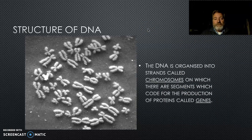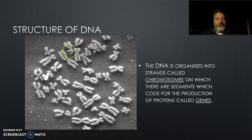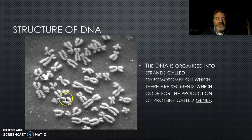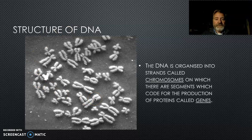In eukaryotes like ourselves, DNA is organized into chromosomes — sections of DNA, each having their own genes. Humans have 46 chromosomes in 23 pairs: 23 from each parent. You can see these in their exposed state here, and we can make a karyotype from that sort of information.